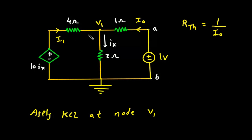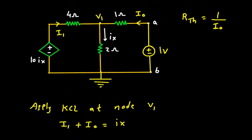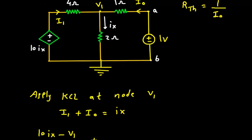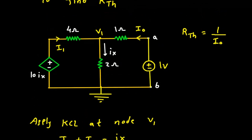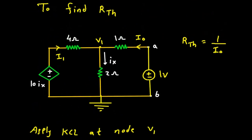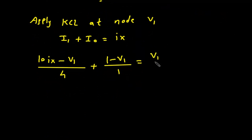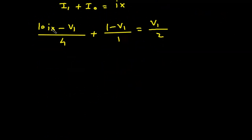Applying KCL at node V1: summation of all entering currents. Entering current is I1 plus IO, and leaving current is IX. So I1 plus IO equals IX. Now I1 is equal to (10·IX minus V1) divided by 4. IO is equal to (1 minus V1) divided by 1. IX is equal to (V1 minus 0) divided by 2.